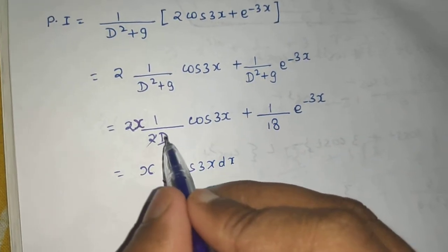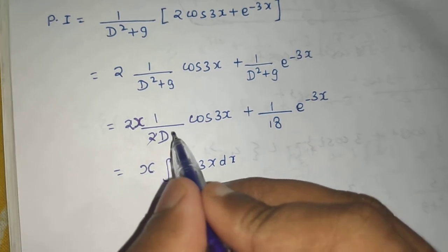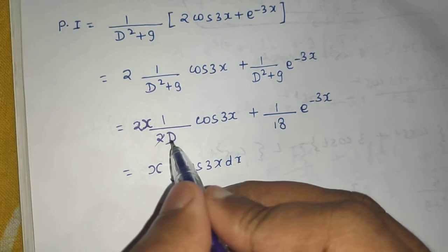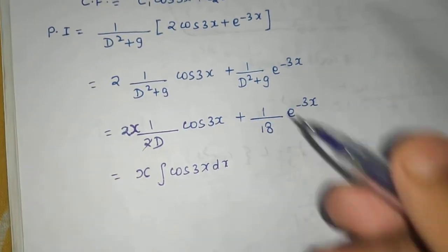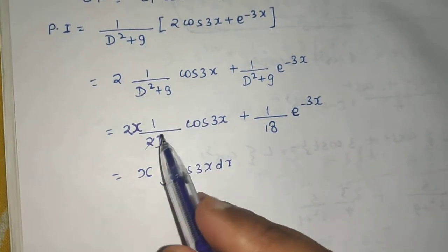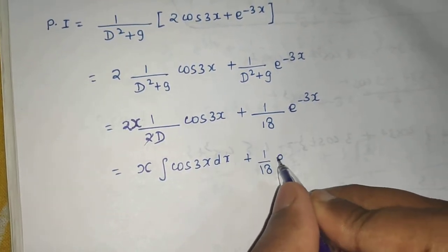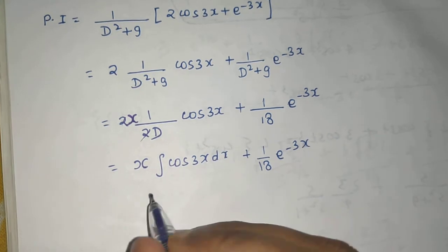You could have also multiplied and divided by D so as to get D squared in denominator and again replace D squared by minus of a squared, but that is a two-step process. Just when you see 1 by D, just integrate. Plus this is perfectly fine: 1 by 18 e raised to power minus 3x.